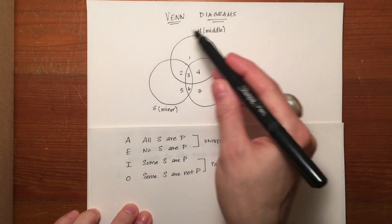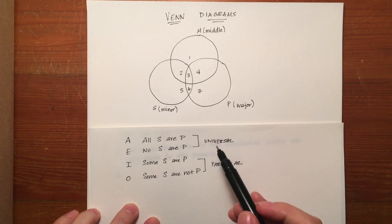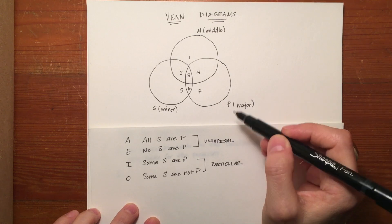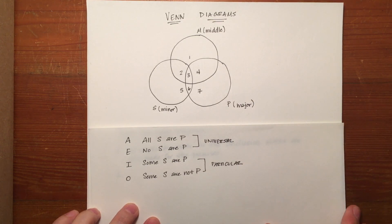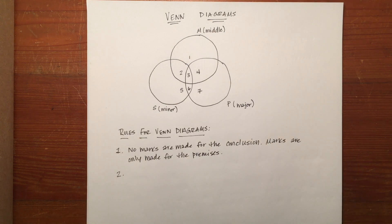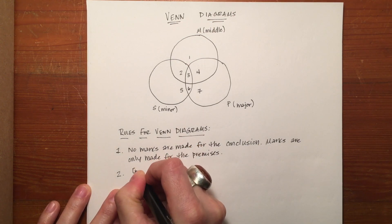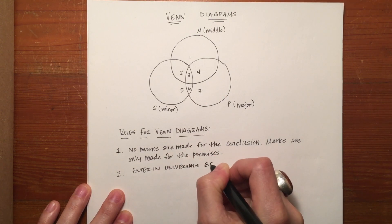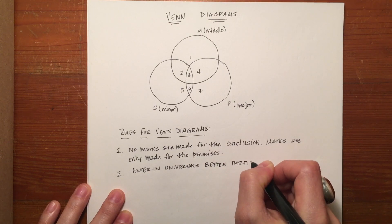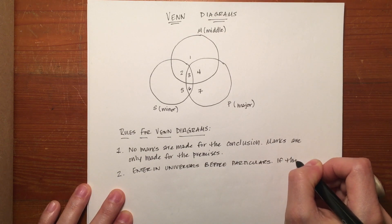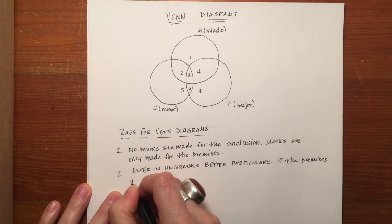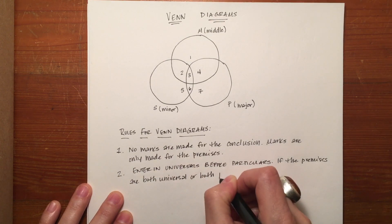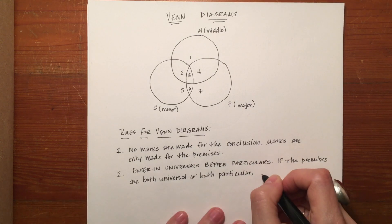So if in your Venn diagram between the two premises you have one universal and one particular, you will enter in the universal premise first and the particular one second. If they are both universal or if they are both particular, it won't matter which one you've entered in first. So we'll say enter in universal premises before particulars. If the premises are both universal or both particular, it does not matter.